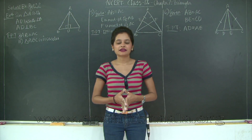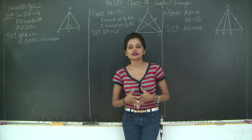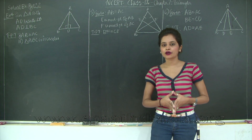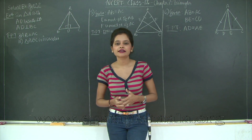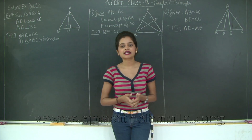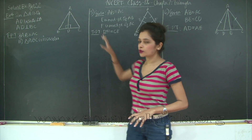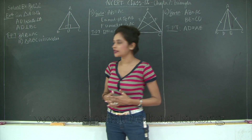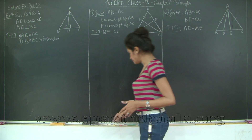Hello students, welcome back. Let us continue with chapter 7 - Triangles. We will take a look at the solved examples before exercise 7.2. This is going to be based on congruency of triangles and the two theorems we learnt in the previous class related to isosceles triangles. Let's start with solved example number four on page 122.